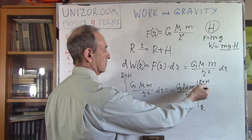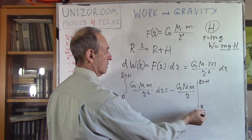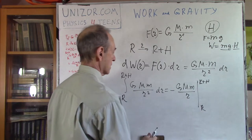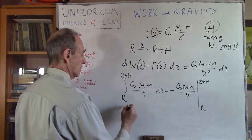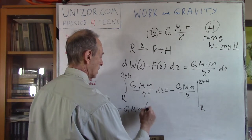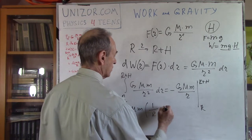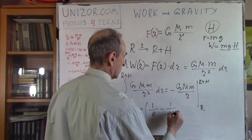So, first we have to put the upper limit, and that would be with a minus sign, and lower with a plus sign. So, which is equal to GMm. So, with a plus sign would be minus 1 over r minus would be 1 over r plus h.